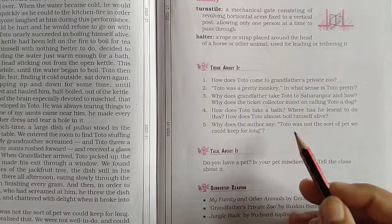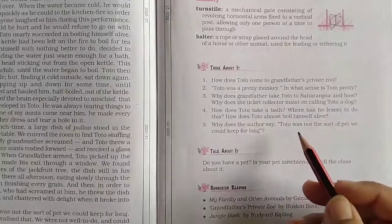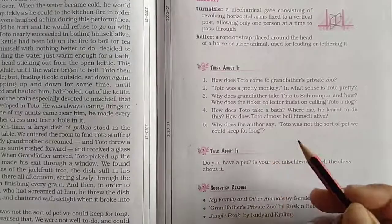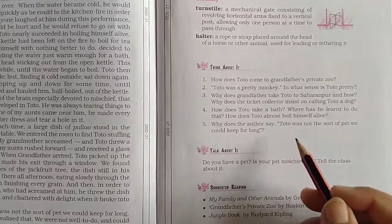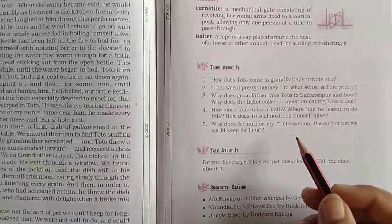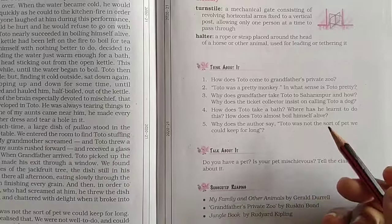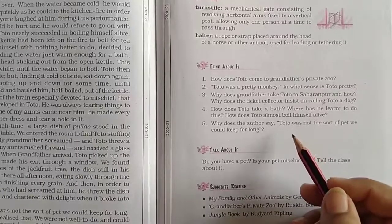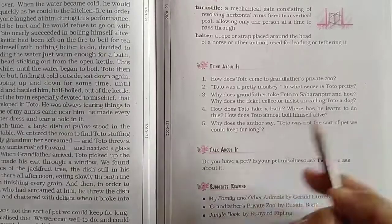Grandfather's private zoo had a number of other pet animals living there in peace. Toto did not let them sleep at night. Grandfather had to go to Saharanpur the next day to collect his pension. Since Toto could not live with other animals in the servants' quarters, grandfather decided to take him along.